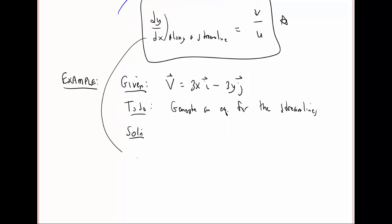First, I would use this equation. dy/dx along the streamline is equal to v over u. v is -3y and u is 3x. We can write this equal to -y over x. Now we can separate the variables.